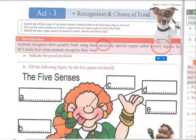Senses are five in number. We have the hearing sense, seeing sense, smelling sense, tasting sense, and touching sense. These senses are supported by sensory organs which are the ears, eyes, nose, tongue, and skin.